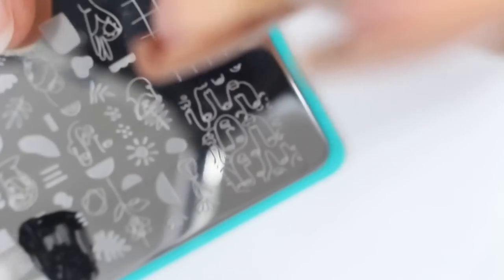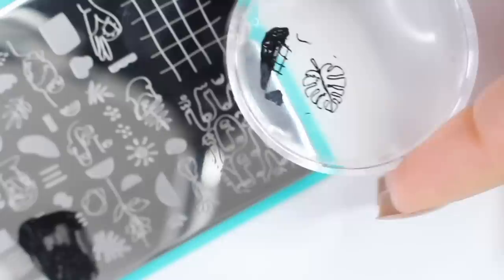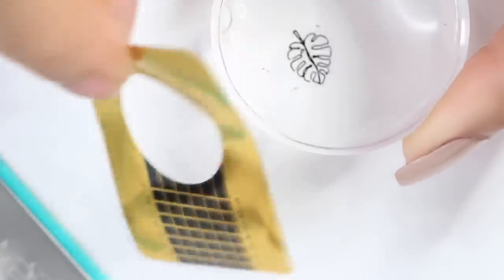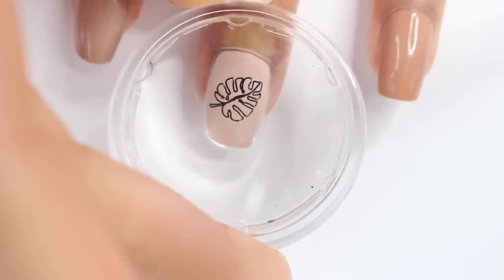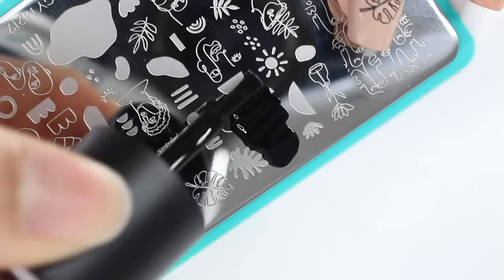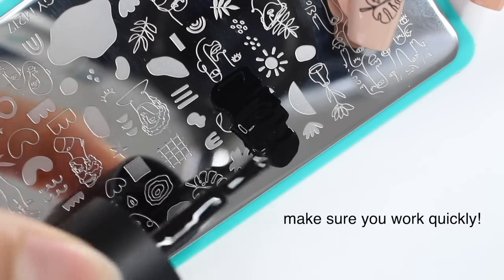So first off, when I switched back to doing designs that have lines in them instead of a filled-in shape, it was so much easier. So if you're a beginner like me, I recommend starting with designs like this just because it's not as easy to mess up. Another thing you want to make sure of is that you're working quickly. So from the time that you apply the polish to the stamping plate until it's on your nail, you need to be going.